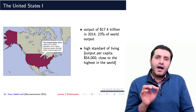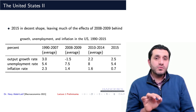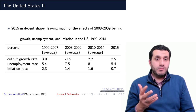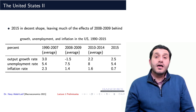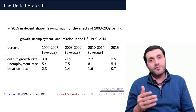Now let's have a closer look at the US economy and its economic performance in recent history. We could look at GDP growth, unemployment rate, and inflation rate — the leading macroeconomic indicators. This table shows these indicators before, during, and after the global financial crisis.